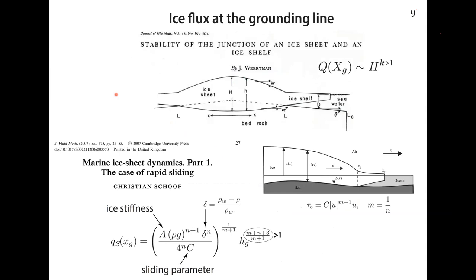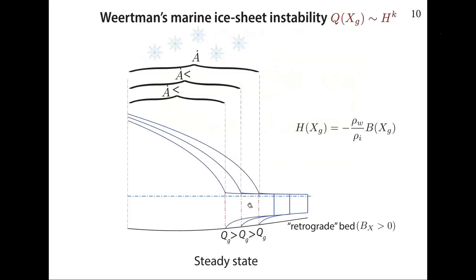Weertman, in his analysis, found that the flux at the grounding line is proportional to the ice thickness raised to some power greater than one — in other words, the flux increases as the ice thickness at the grounding line increases. Some 30 years later, Christian Schoof revisited the problem. He used a more sophisticated model that included basal sliding, but arrived at a quantitatively similar expression: the flux at the grounding line is proportional to the ice thickness raised to some positive power, meaning the flux gets larger as the ice thickness increases. So we now have all the information to follow Weertman's arguments.